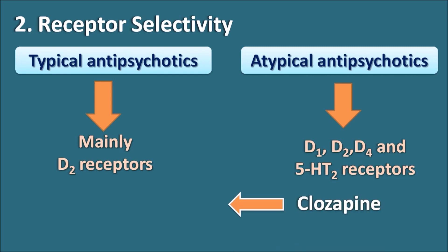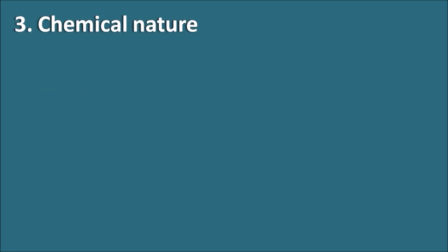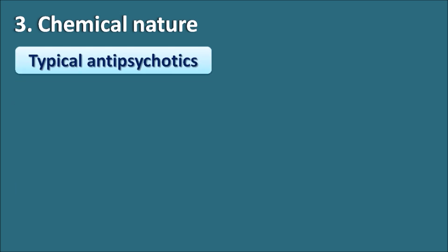For example, clozapine blocks D1 and D4 receptors, while risperidone blocks 5-HT2 receptors. In this way, atypical antipsychotics work through a multiple receptor mechanism, and their antipsychotic action can be attributed to any of these receptors.